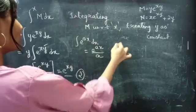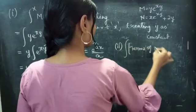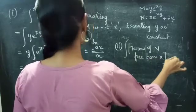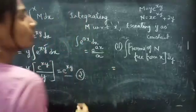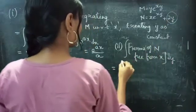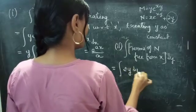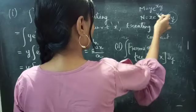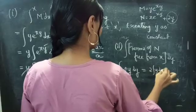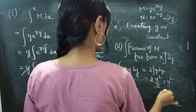Now the integral of terms of N that are free from x: that is 2y. We integrate 2y with respect to y: 2 times integral of y dy equals 2 times y²/2, and the 2 cancels to give y². Consider this as equation 3.